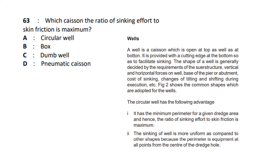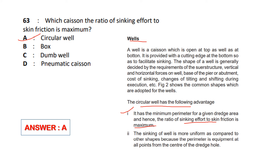The ratio of sinking effort to skin friction is maximum for which type of well? The options are circular well, box, dumbbell, and pneumatic caisson. The answer is circular well, because it has the minimum perimeter for a given dredge area, and hence the ratio of sinking effort to skin friction is maximum.